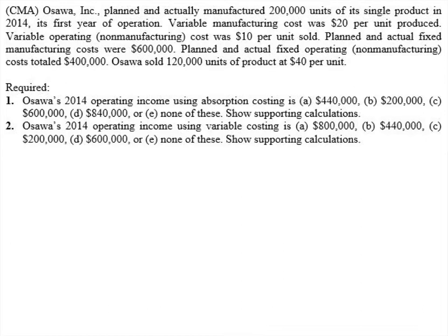Then calculate their operating income using variable costing. The answer choices are $800,000, $440,000, $200,000, $600,000, or none of these. Please pause the video now and try it on your own, then come back and we'll discuss it together.